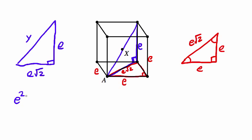So we're going to say e² + (e√2)² = y². And of course when I square these things I get e² + 2e² = y², so 3e² = y².